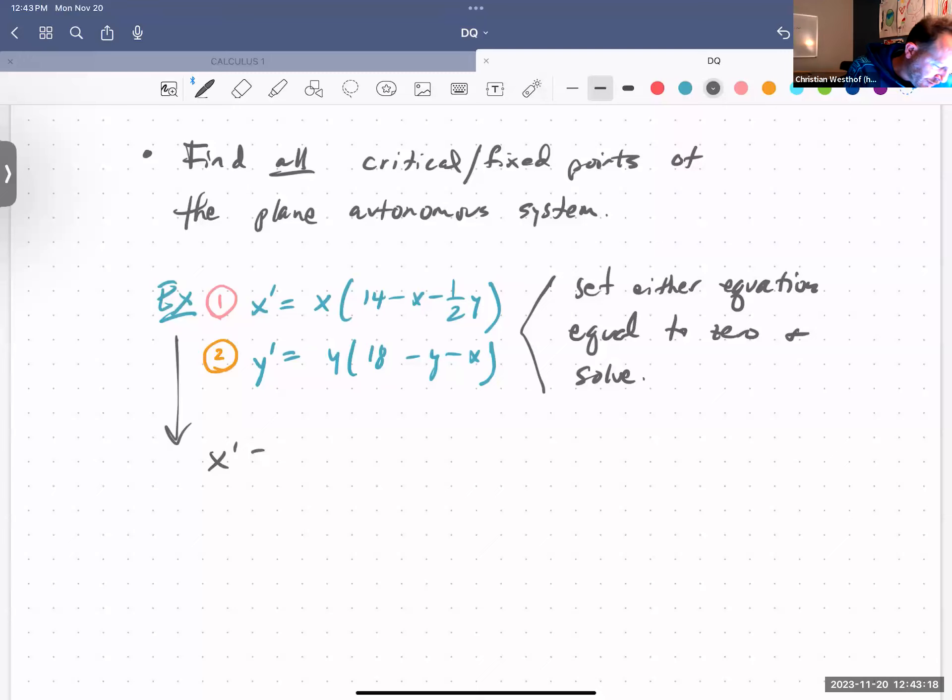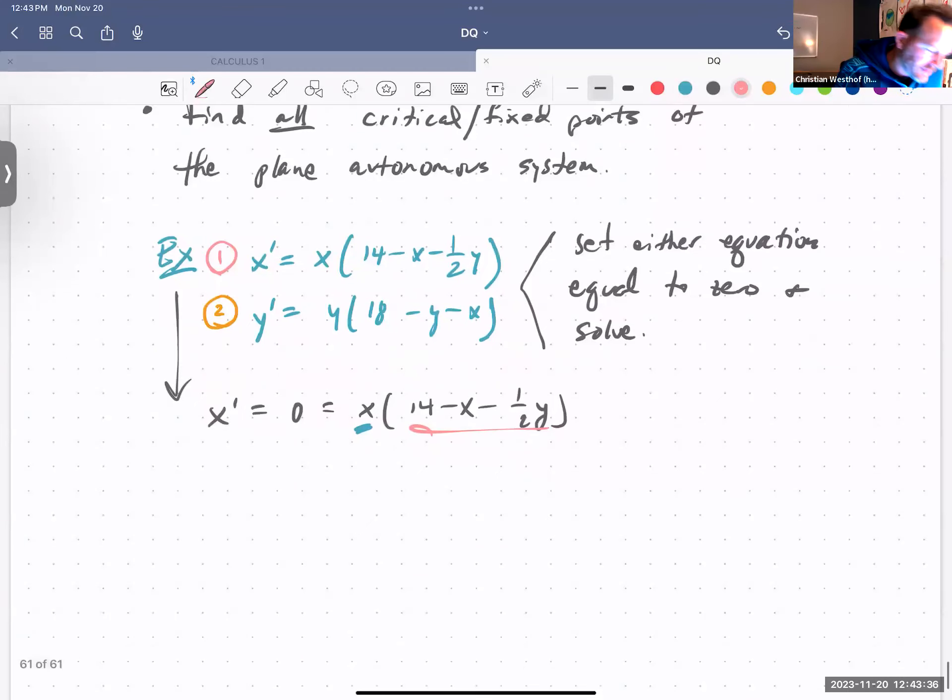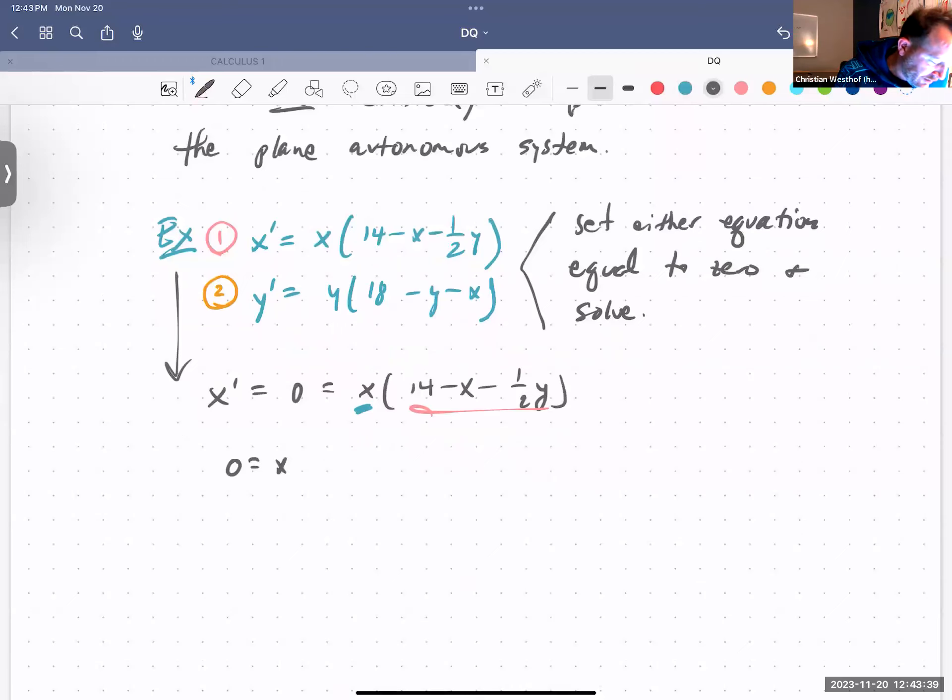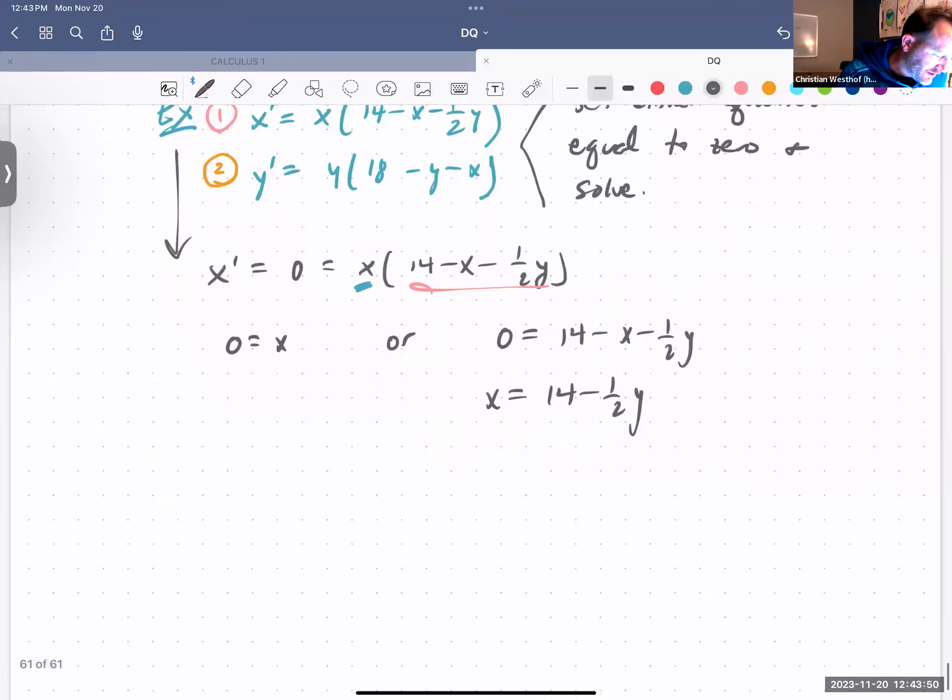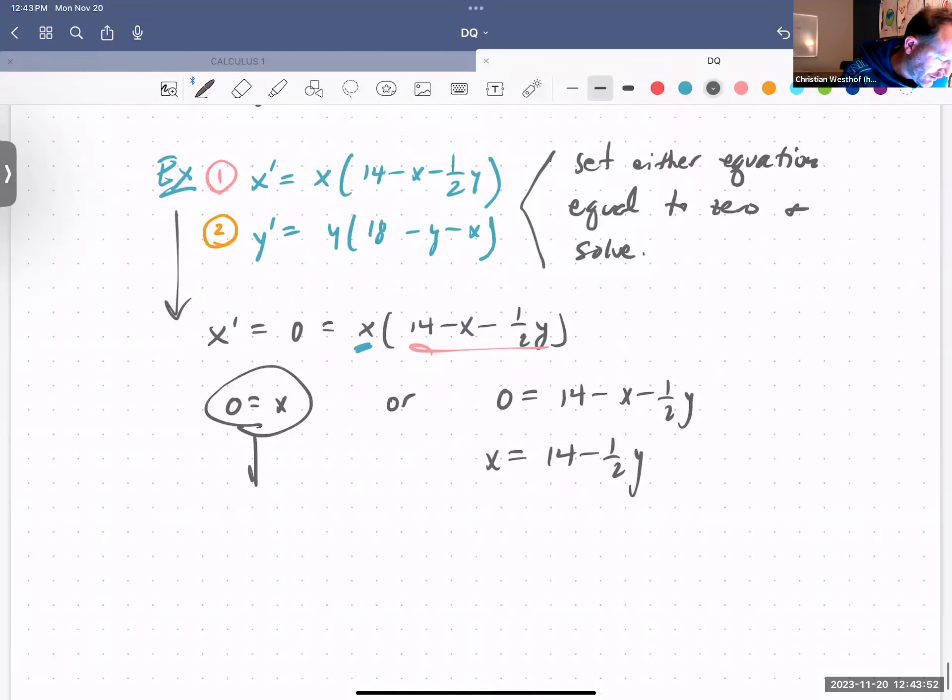So let's take equation one. X prime is equal to zero and it's equal to x times 14 minus x minus one half y. So either you have two factors, and either one is equal to zero. So zero is x or zero is 14 minus x minus one half y. And that tells you that x is 14 minus one half y. So let's take this one and plug it into number two.